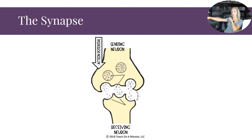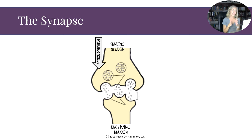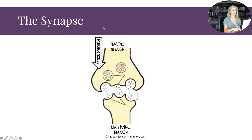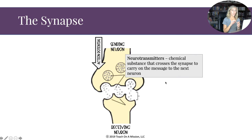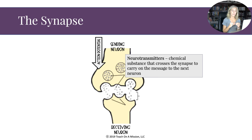Now let's talk about what happens at the end of a neuron and between neurons. The synapse is a key factor. The sending neuron has completed action potential down the axon and we're now at the axon terminal bud. Neurotransmitters — tiny chemical substances — cross the synapse to carry the message to the next neuron.